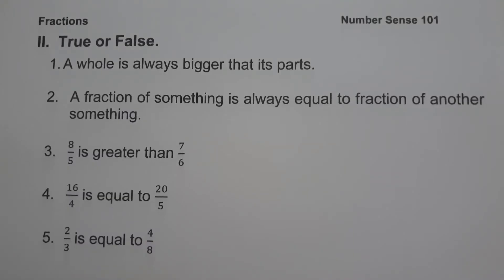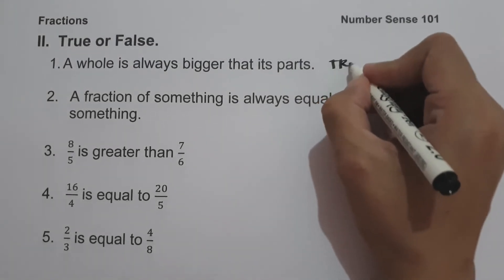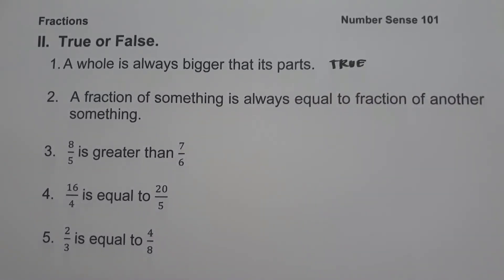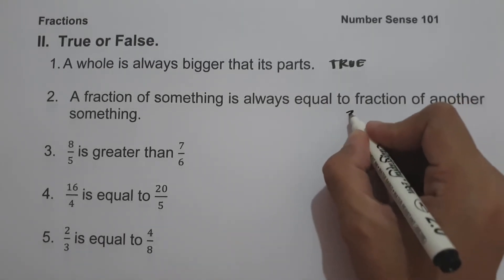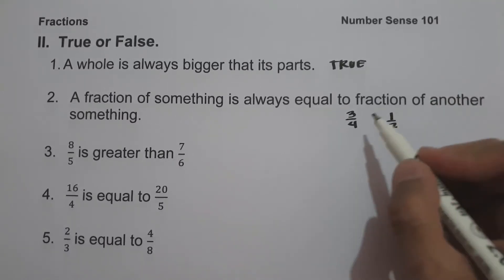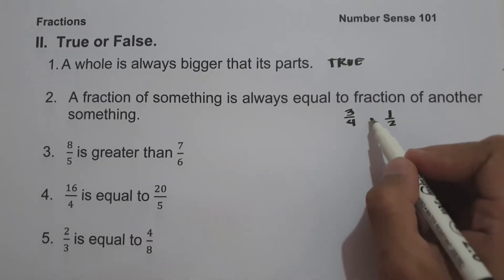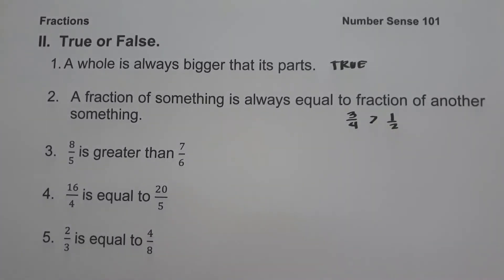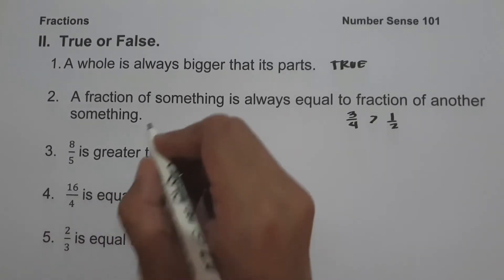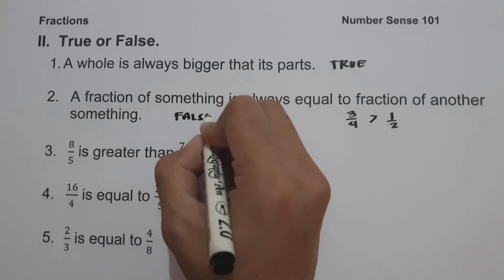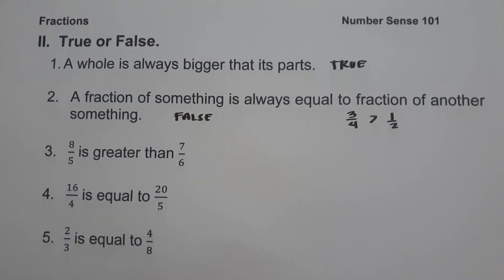On the second set of examples, we have true or false — write true if the statement is correct and false if incorrect. On number 1: a whole is always bigger than its parts. A whole is always bigger than its parts, so the answer is true. On number 2: a fraction of something is always equal to a fraction of another something. For example, 3 fourth is not equal to 1 half because 3 fourth is greater than 1 half, so this statement is false.